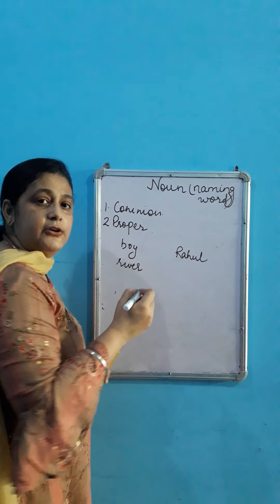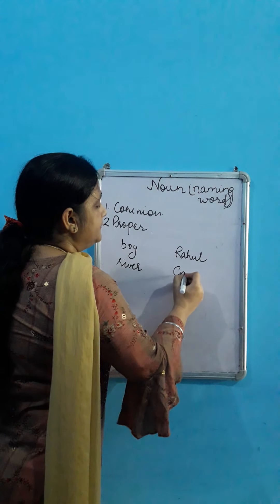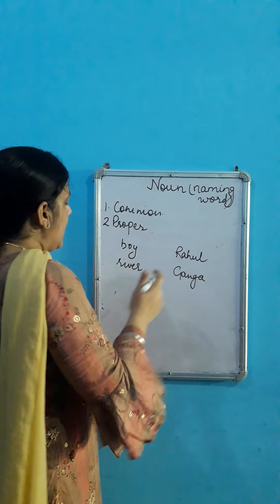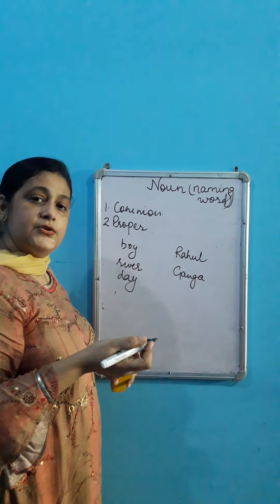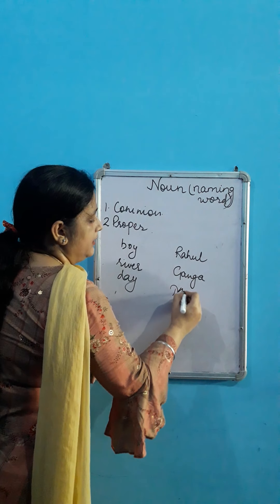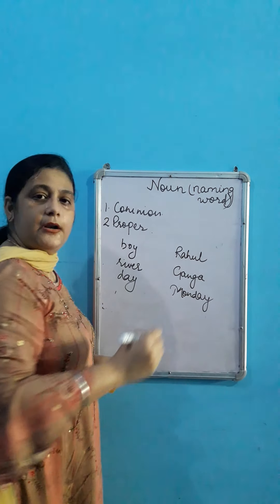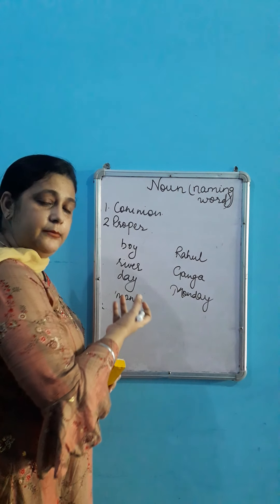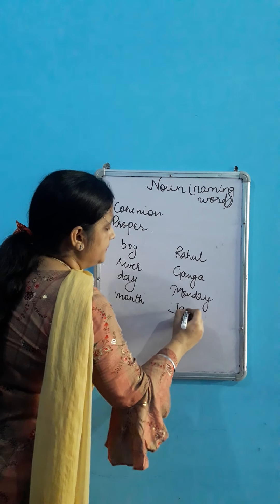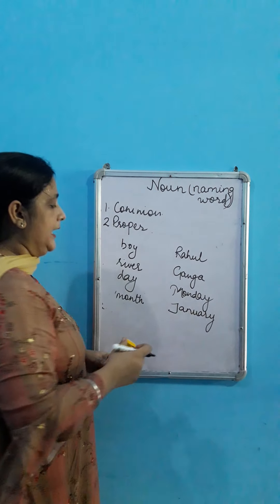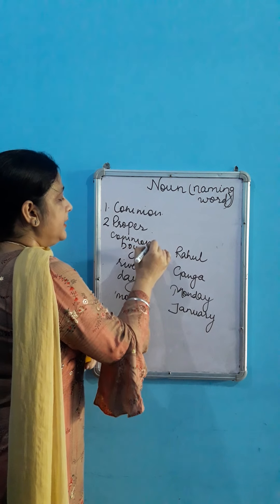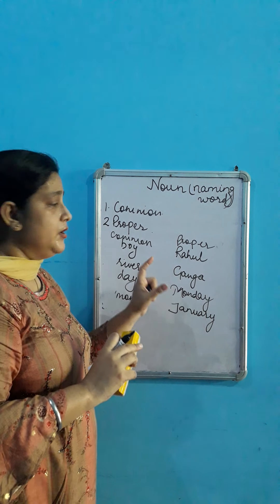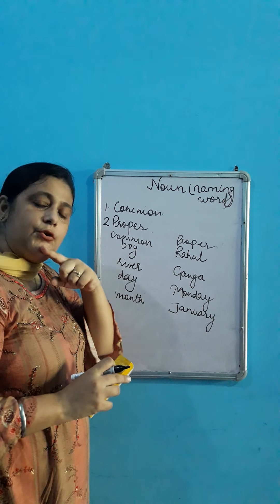Agar aap kaho 'river,' to river to koi bhi ho sakti hai. But agar aap kaho 'Ganga,' to woh particular river hai — to Ganga kya hoga? Proper noun. Agar aap kaho 'day,' to day to koi bhi ho sakti hai — common noun. Agar aap kaho 'Monday,' then it will be a proper noun. Agar aap kaho 'month,' it can be a common noun. Agar aap kaho 'January,' to ye kya hai? Proper noun. In this way it is clear — common noun kya hota hai aur proper noun kya hota hai. Proper se hum particular kisi ek cheez ko highlight karte hain, common us tarah ke jitne bhi hote hain unko include karta hai.